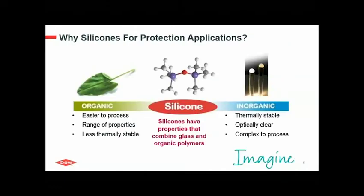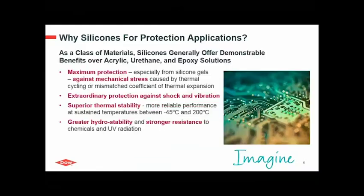So why silicones for protection applications? Silicones are hybrid molecules — they're made up of organic and inorganic chemistry. While organic polymers are easier to process and provide a wide range of properties, they are less thermally stable. Inorganic materials like glass are more thermally stable and optically clear, but are more complex to process. Silicones combine the benefits of both chemistries while compensating for their limitations.